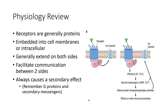Next, a brief physiology review. We have receptors on all of our cell membranes — proteins embedded into membranes that extend from the outside to the inside of the cell, facilitating communication both ways. They also have G proteins which cause secondary effects inside the cell — those secondary messenger processes. A lot of our drugs act on these receptors. The receptors are really what we're targeting for most medications.